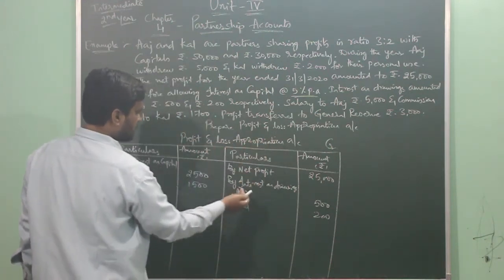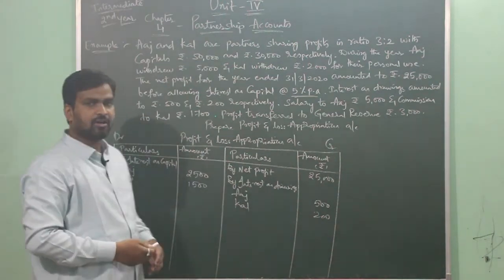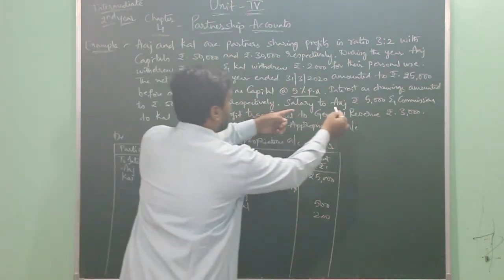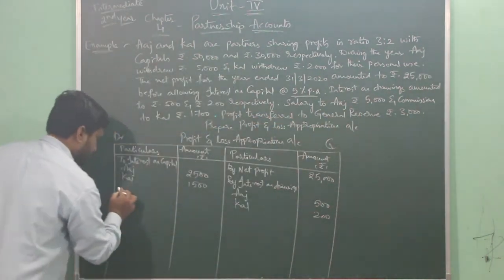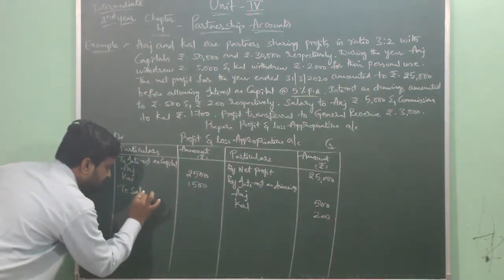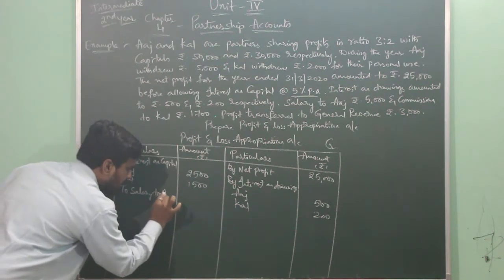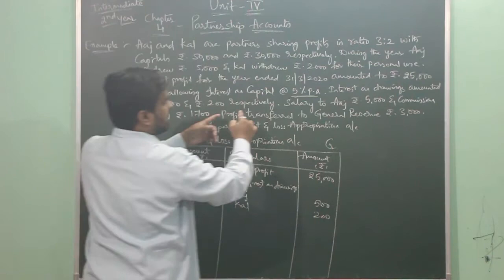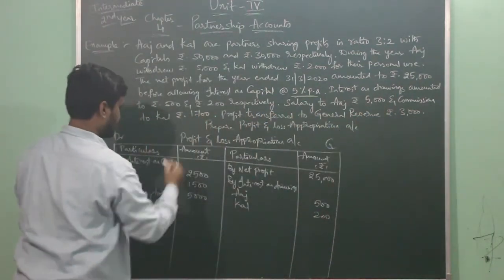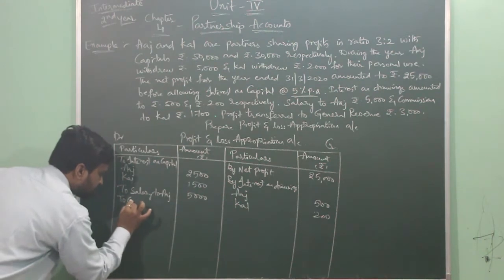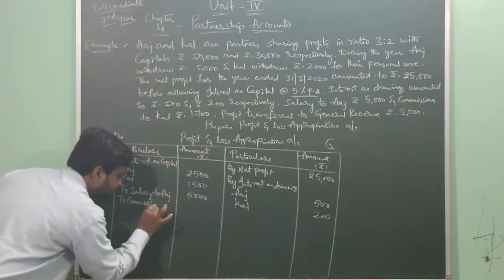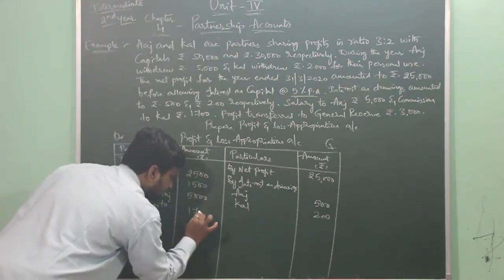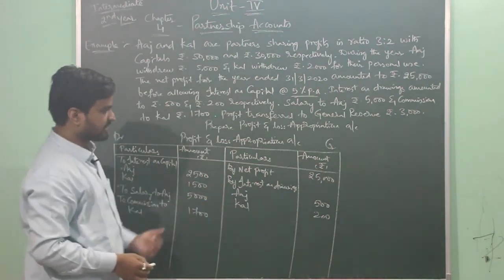Again, the account will be debited with salary, commission, or any other remuneration paid to the partner. Salary to Aaj is 5,000, recorded as 'To Salary to Aaj — 5,000'. The other partner, Kull, is receiving a commission of rupees 1,700, recorded as 'To Commission to Kull — 1,700'.